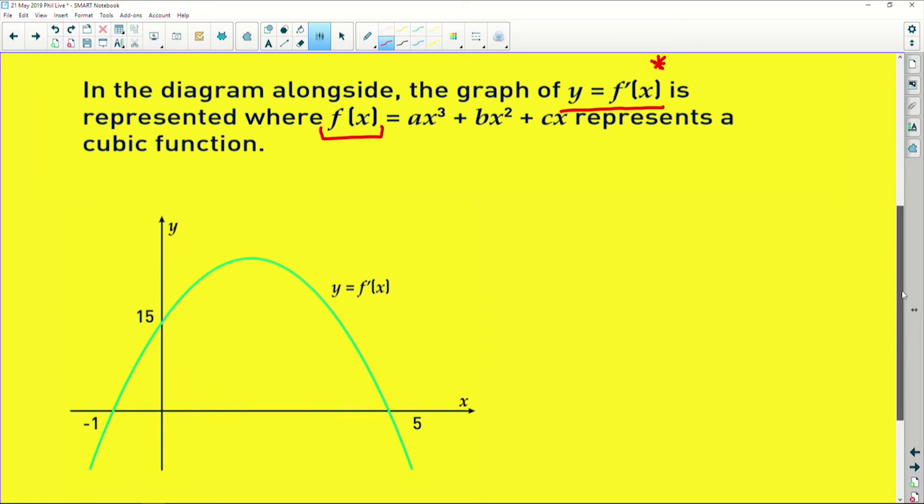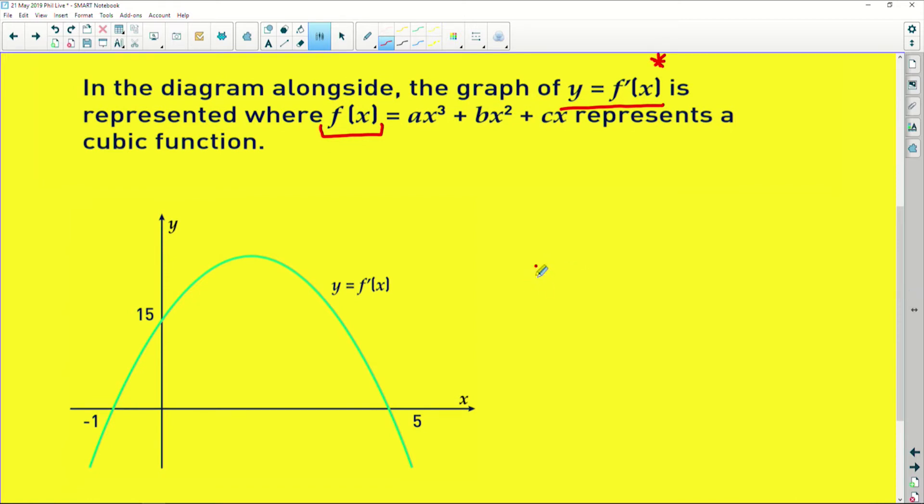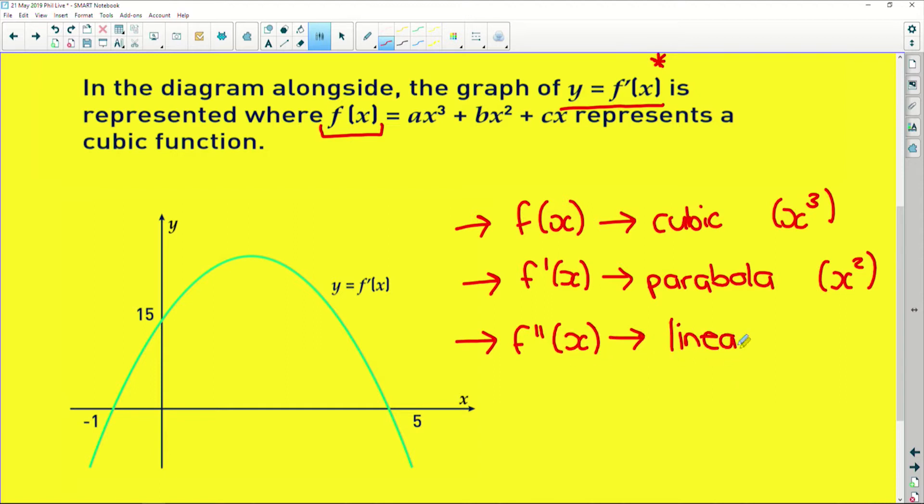Now, if we're given that the first derivative is a parabola, which is what this clearly is, and it's going to be in terms of x squared, it means that the original function before you derived its equation is a cubic function, and it's in terms of x cubed. And the second derivative, if you derive it again, is going to be in the form of a linear function, and that is just in terms of plain old x. So what they're saying in this question is they've given us a parabola, and they're saying that this is the first derivative of the original cubic function. So if we derive the equation of the cubic function, it gives us the equation of this exact parabola. Bear that in mind.